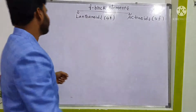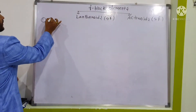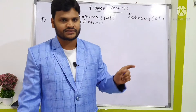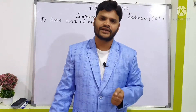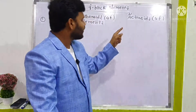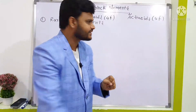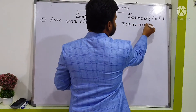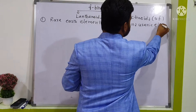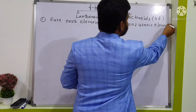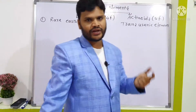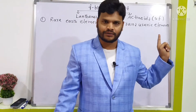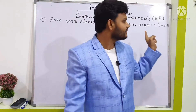First point: lanthanoids are also called rare earth elements — rare meaning less abundant in the earth's crust. Actinoids are called transuranic elements. After uranium, every element is an artificial element, while before uranium they are natural elements — that is the reason this name arrived.